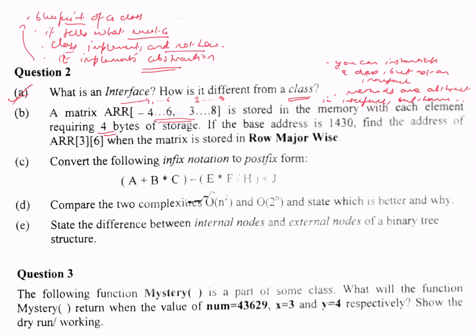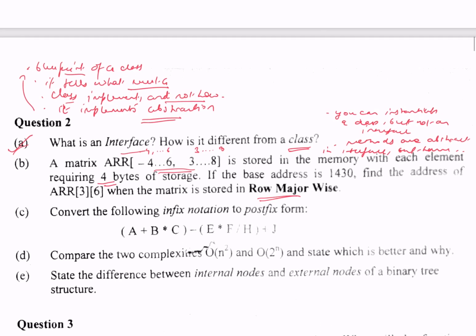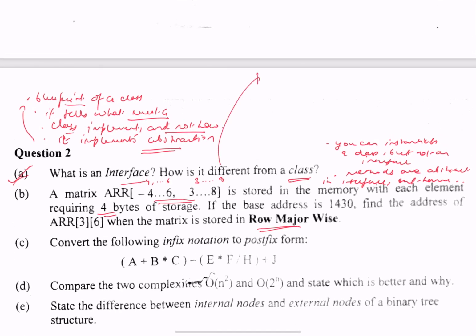If the base address is 1430, find the address of ARR[3][6] when the matrix is stored in row major wise. If you've gone through the video where I told you how to do this calculation, for row major the general formula comes out to be base address plus number of columns into (r - r₀) plus (c - c₀) into size.